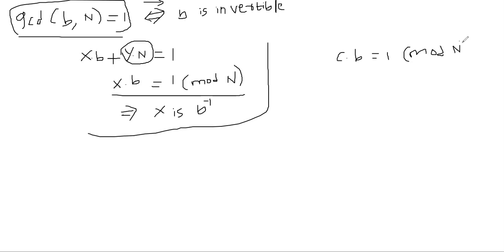So what can we now say when c times b is congruent to one mod n? It means that we can rewrite it as c times b must be some constant times n plus one. That's the definition of modular arithmetic. Whenever we say c times b is one mod n, it means c times b is some constant k, k is an integer, times n plus one. So which implies that I can rewrite it as c times b minus k times n is equal to one.